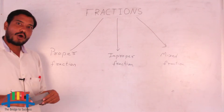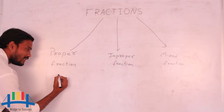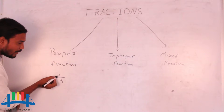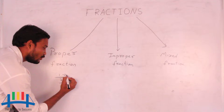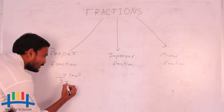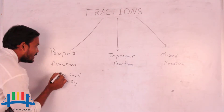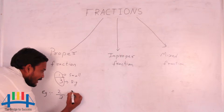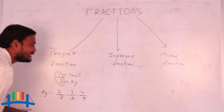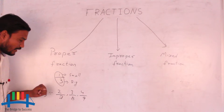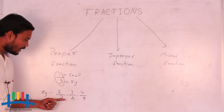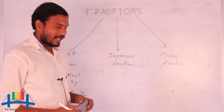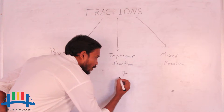In a proper fraction, the numerator will be less and the denominator will be more. When comparing numerator and denominator, the numerator is smaller than the denominator. Examples for proper fractions are 2 by 7, 3 by 8, and 4 by 9. In all these examples, the numerator is smaller than the denominator.